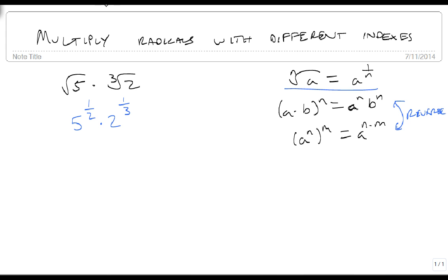And we're going to pretend that we're adding these fractions, 1 half to 1 third, so our LCD is 6, which is 3 over 3, 2 over 2. This gives me 5 to the 3 sixth times 2 to the 2 sixth.